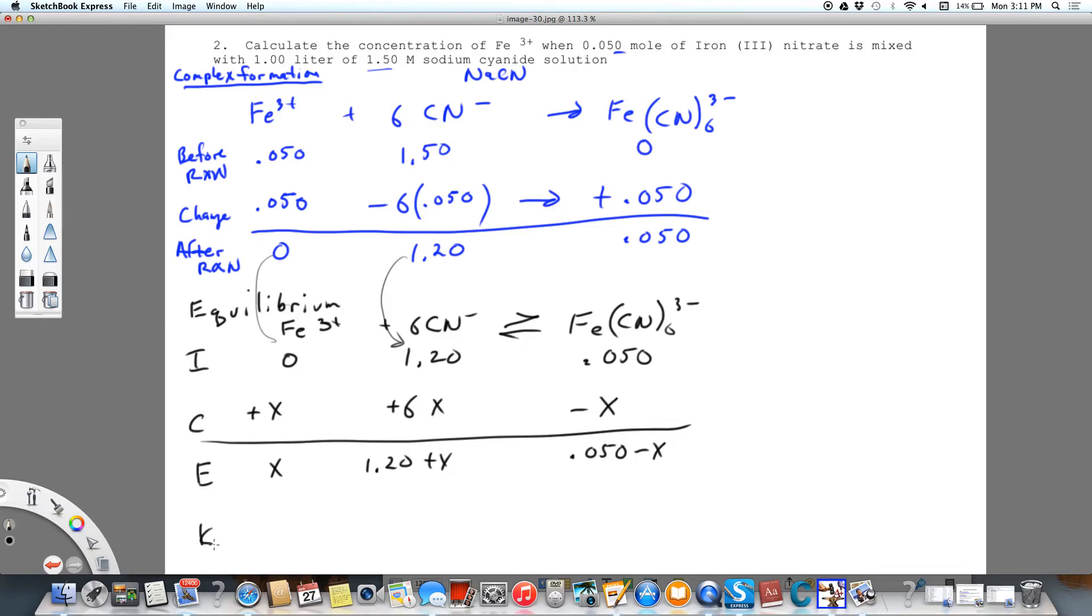So KF, that's what we're going to use. And that's why we're doing this second step, is so that we can use KF. If we look it up, it's 4.0 times 10 to the 43. So see, that's going to be way towards the products and away from the reactants. So X is just going to be tiny, tiny, which is what we want to simplify our math.